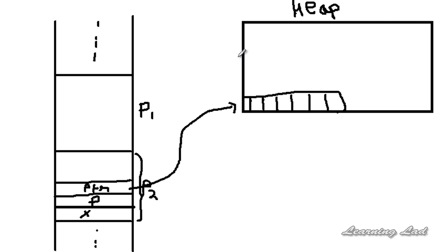Once we are done with this allocated memory, we need to free it. If you forget to free the memory, other programs running in the system can't use it. Another use case for dynamic memory allocation is when we don't know the length or size of user input. We can ask the user for the size and then allocate exactly the right amount of memory using dynamic memory allocation.